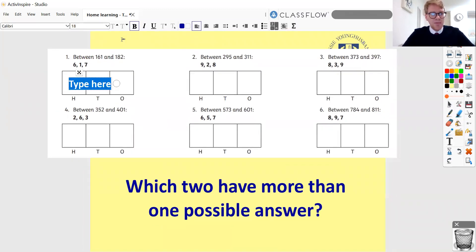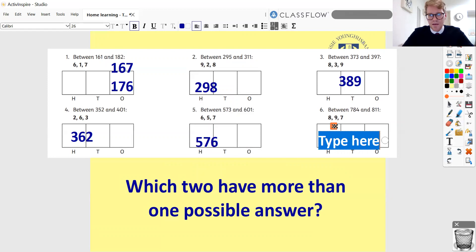Right. So, over here, we've got a couple of possible answers. We could have 167 or we could have 176. Sorry, I know that doesn't quite fit into the boxes there. Over here, we've got something between 295 and 211. We could have 298. Over here, it's going to have to start with a 3. It's going to be 389. Over here, we've got 362. And then, we've got 576. And over here, we've got this one with a couple. We've got 789 or 798.